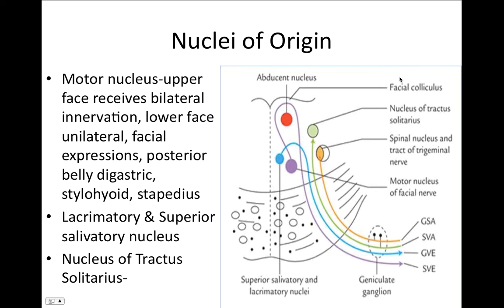Coming to the nuclei of origin — since the nerve arises from the brainstem, the nuclei are present there. We have the motor nucleus, the superior salivatory nucleus, and the nucleus tractus solitaris. The motor nucleus receives bilateral innervation for the upper face and unilateral innervation for the lower face. It innervates the muscles of facial expression, the posterior belly of digastric, the stylohyoid, and the stapedius.